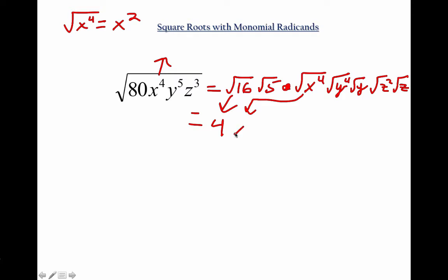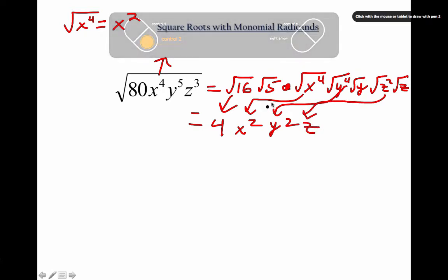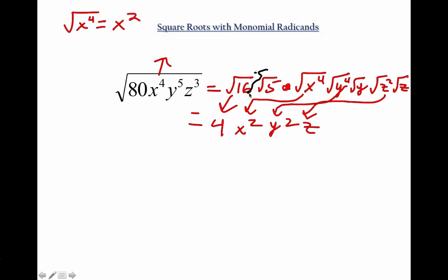Now, let's get all our perfect squares out. So 4, x squared, y squared, z, what's left over still underneath a radical? That guy, that guy, and that guy. Square root 5, y, z.